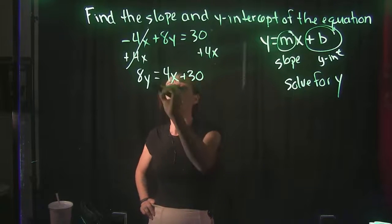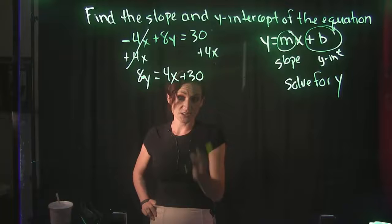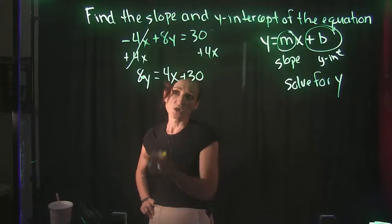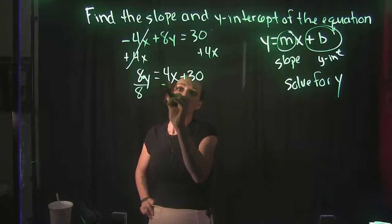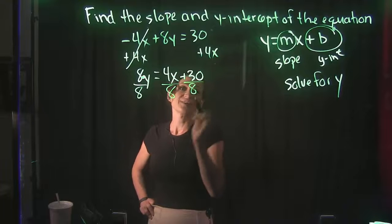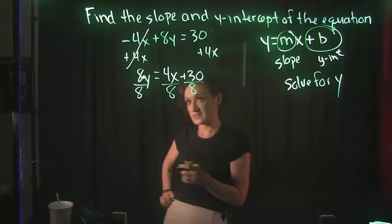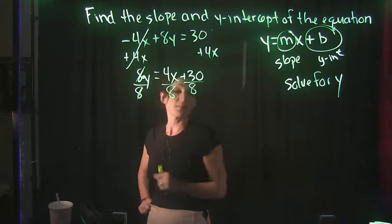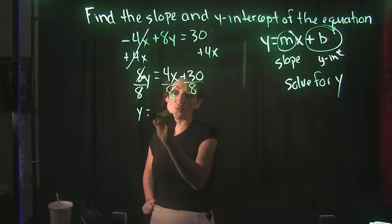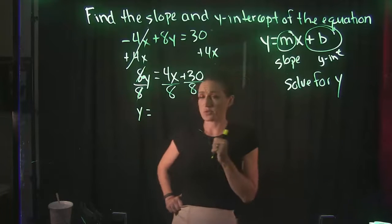We have 8y, though. And remember that this is multiplication. This is 8 times y. So the opposite of multiplication is division. So we need to divide everything by that 8. Now 8 divided by 8 cancels, and we're going to drop down that y.